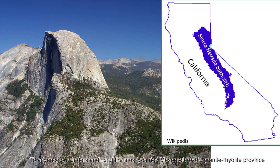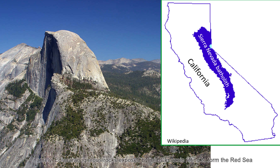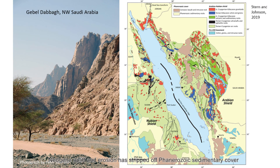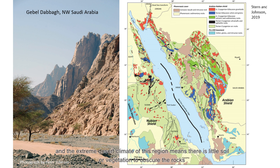To advance our understanding of the mostly buried Mesoproterozoic Granite Rhyolite Province, it may be worthwhile considering a better-exposed analog: Ediacaran igneous rocks exposed by mid-Cenozoic rifting to form the Red Sea. Neogene uplift and erosion has stripped off Phanerozoic sedimentary cover and exposed this crust continuously for about 1,500 kilometers on either side of the Red Sea. The extreme desert climate of this region means that there is little soil or vegetation to obscure the rocks.